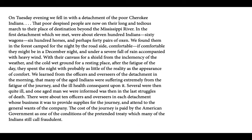On Tuesday evening we fell in with a detachment of the poor Cherokee Indians. That poor despised people are now on their long and tedious march to their place of destination beyond the Mississippi River. In the first detachment which we met were about 1,100 Indians, 60 wagons, 600 horses, and perhaps 40 pairs of oxen. We found them camped for the night by the roadside — if comfortable they might be — in a December night under a severe fall of rain accompanied with heavy wind.